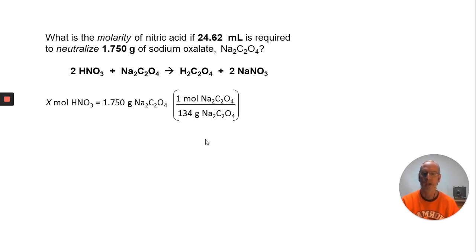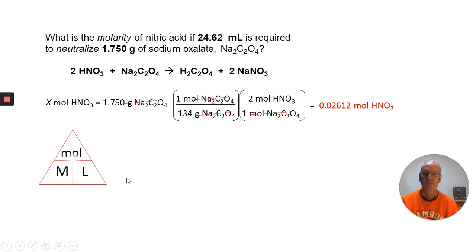We'll go ahead and get the grams of sodium oxalate to cancel. Then now we use the coefficients from the balanced chemical equation. One mole of sodium oxalate will be required for every two moles of nitric acid, and moles of sodium oxalate cancel, and we're left with a number of moles of nitric acid. At this point, if we know the moles and we know a volume, we can probably figure a molarity. Does this look familiar? That little triangle - molarity equals moles over liters.